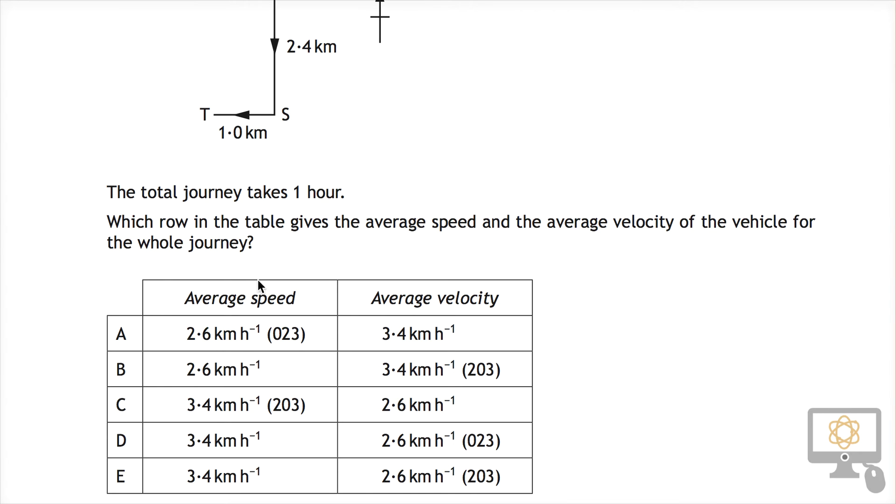The average speed is the total distance divided by the total time, and the total distance is 2.4 kilometres plus 1 kilometre, which is 3.4 kilometres. So that's our distance.